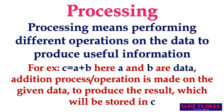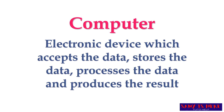Processing means performing different operations on the data to get useful information. For example, C is equal to A plus B — this is a process where A and B are data, A plus B is the addition operation, and the result is stored in C. This is called processing.